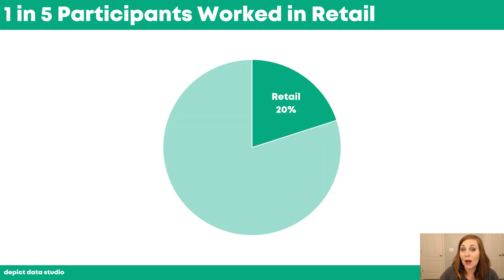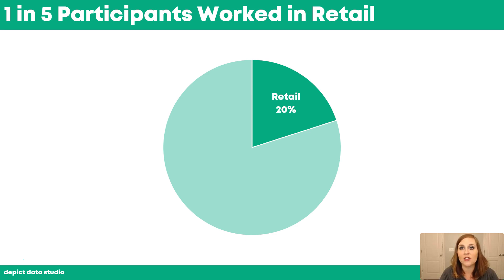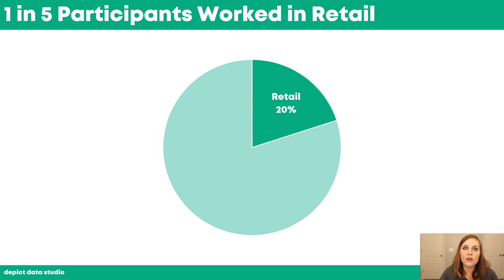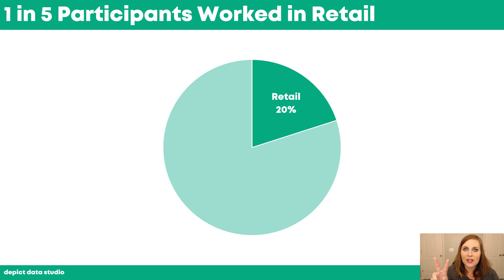Option C would still be a pie chart, but it's a two-slice pie chart. Let's pretend your audience is particularly interested in retail — you could just combine or collapse all the other categories and turn your seven-slice pie into a two-slice pie. You could also make a two-slice donut chart, a two-slice square pie, or a two-slice waffle chart. Anything around the two-slice limit is fair game.